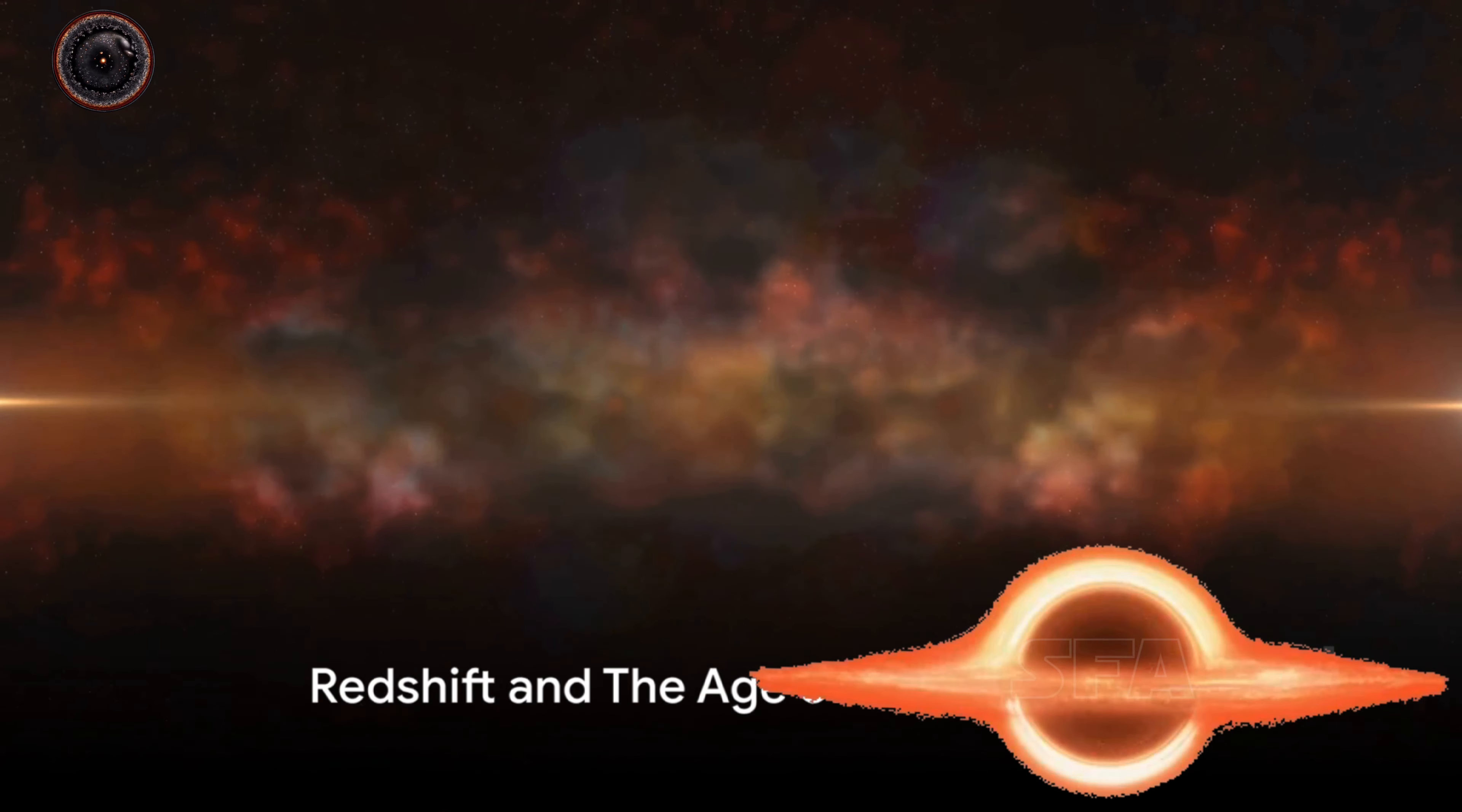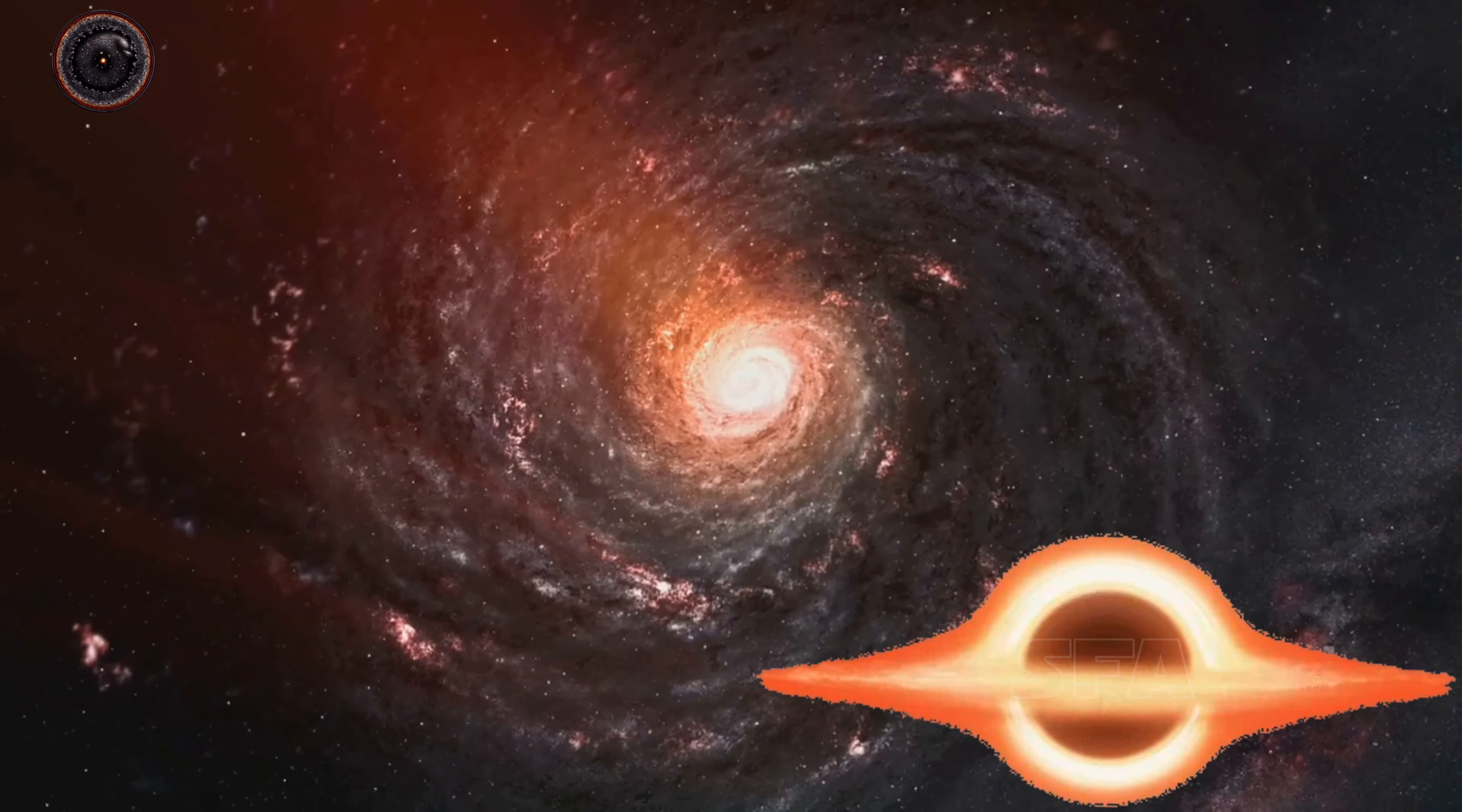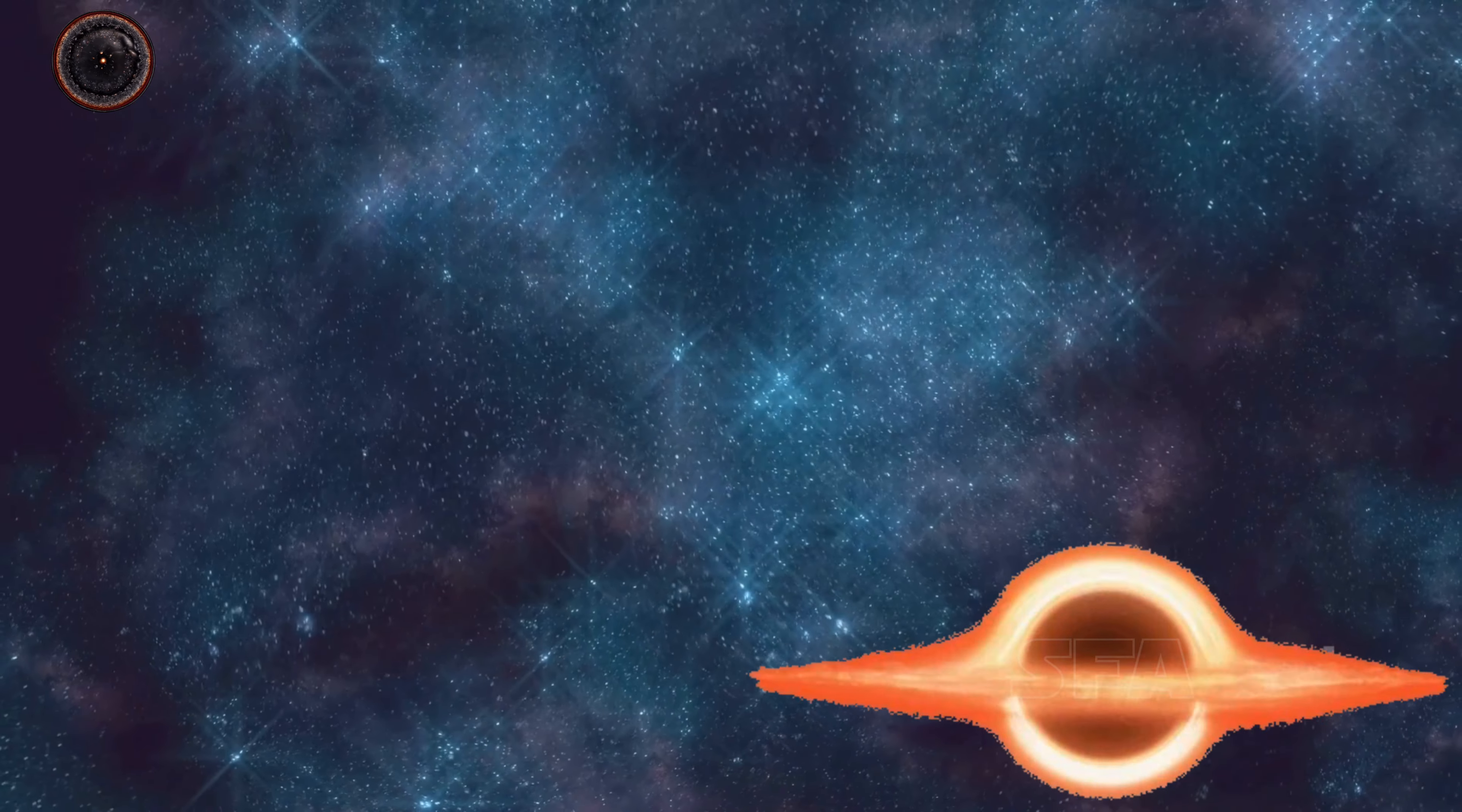The redshift of light from distant galaxies is a cosmic speedometer. This intriguing phenomenon is a key tool that scientists use to understand our universe's expansion and to estimate its age. So what is this redshift we're talking about? Well, when we look at distant galaxies, we notice something peculiar. The light they emit appears more red than we'd expect, as if it has been stretched out. This is known as redshift, and it happens because those galaxies are moving away from us.